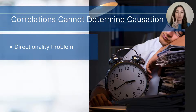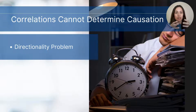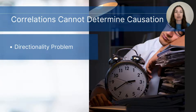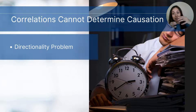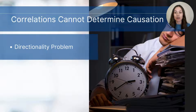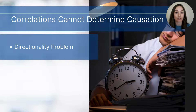In other words, if you have two variables, variable A and variable B, you may know that they're correlated based on the evidence you've collected, but you may not be sure if A causes B or if B causes A. There could also be a potential bidirectional influence where A is causing B and B is causing A, and they are influencing one another. This is a very important consideration when looking at research collected in correlational studies.